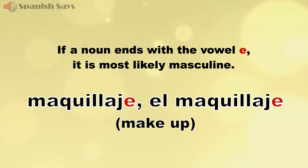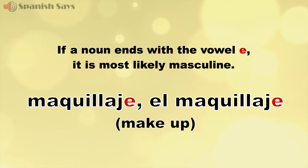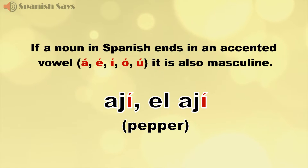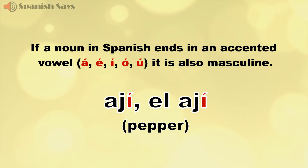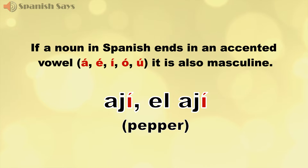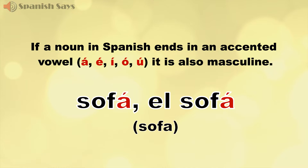If a noun ends with the vowel E, it is most likely masculine. For example, maquillaje — el maquillaje. If a noun in Spanish ends in an accented vowel — á, é, í, ó, ú — it is also masculine. For example, ají — el ají, or the word sofá — el sofá.